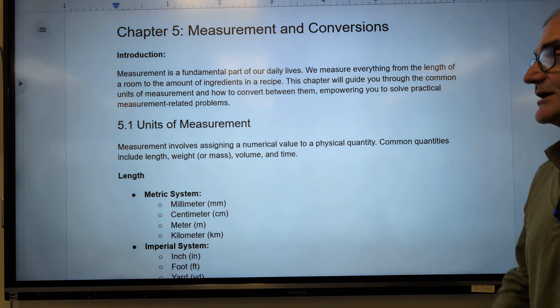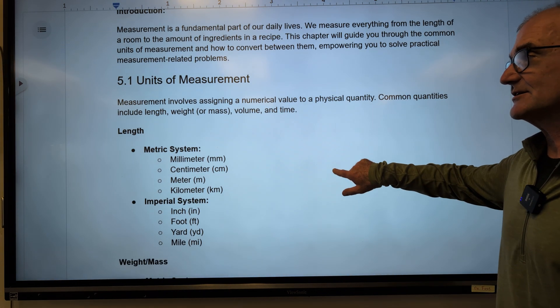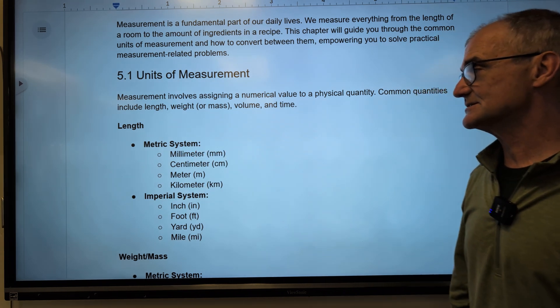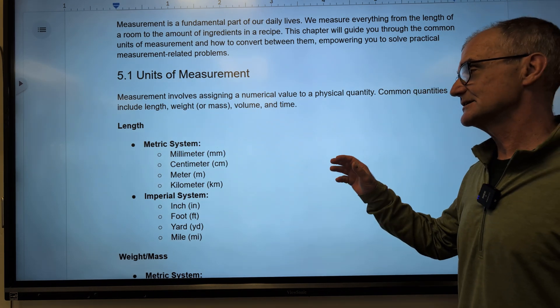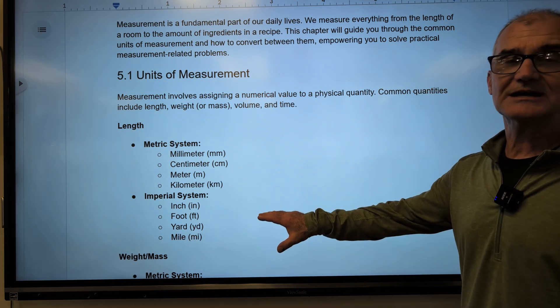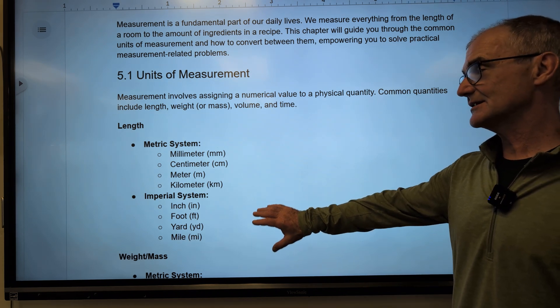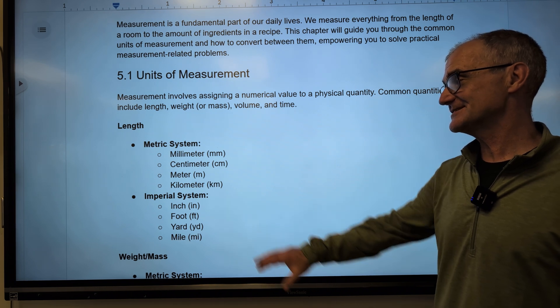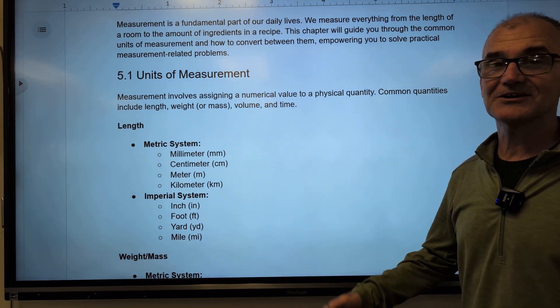There are two primary measurement systems that are used. The first is the whole world uses the metric system, millimeters, kilograms for weight, and then the U.S., I think Burma, and maybe Liberia. Those are only three countries in the world that use the imperial system, inches, feet, yards, pounds.